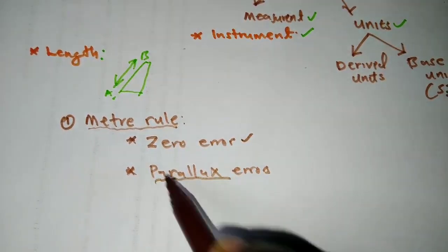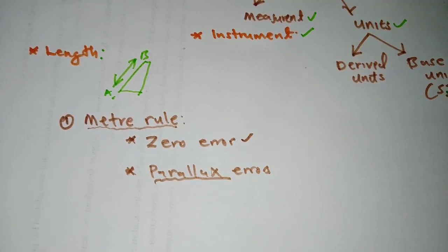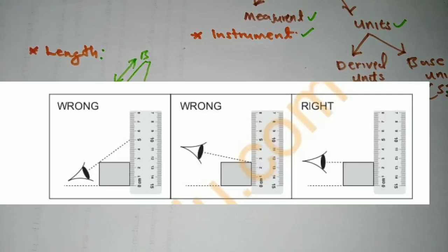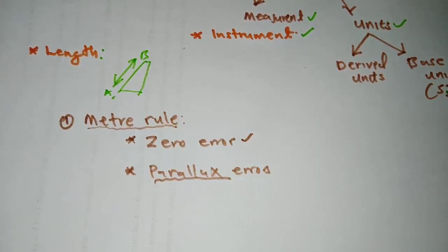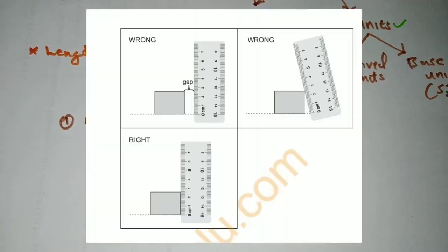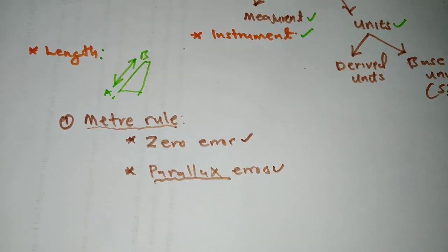A parallax error is where you're simply not positioning your eye correctly. The first diagram shows where the eye was placed being blocked by the object; the other one shows it's on top of the object. The correct way of placing your eye when measuring with a meter rule is shown in the last diagram. Another source of parallax error is when there's no contact between the markings of a rule and your object — for example, when there's a gap or when the meter rule is tilted.